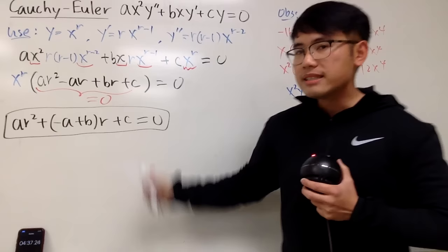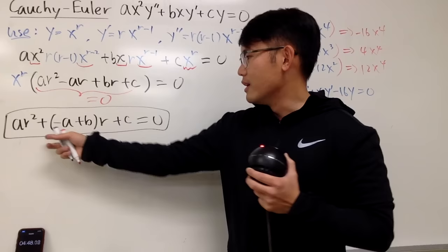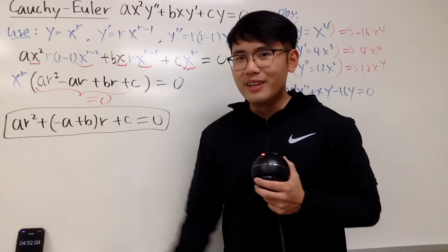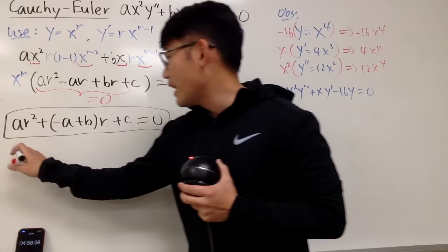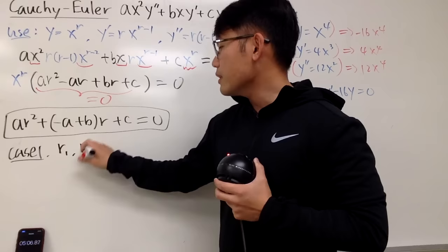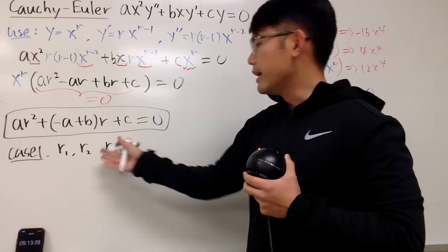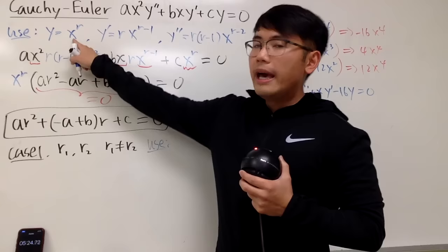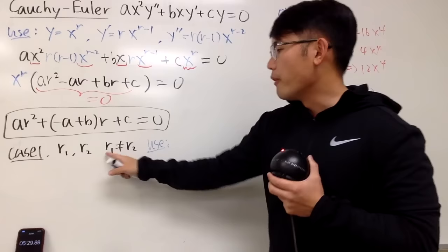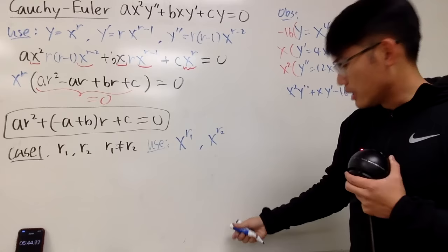This characteristic equation has a name. It's still a quadratic equation in r, and we have three cases. Case 1: suppose r₁ and r₂ are both real and different (r₁ ≠ r₂). In that case, y = x^r is a solution in general form, so the building blocks to the general solution are x^(r₁) and x^(r₂).